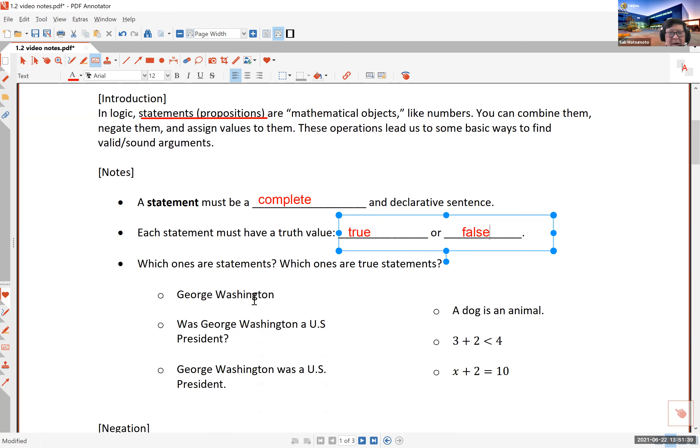Now, which ones are statements here? Which ones are true statements? If somebody says George Washington, you can see there's no verb here. I mean, George Washington is what? Did he do anything? What was he? There's nothing except the name of a person. So this is not a proposition. It is not stating anything. Was George Washington a U.S. President? This, remember, is a question. It is an interrogative sentence. And therefore, it is not a mathematical proposition.